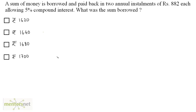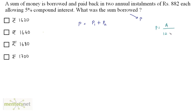A sum of money is borrowed and paid back in two annual installments of Rs. 882 each, allowing 5% compound interest. What was the sum borrowed? The sum borrowed is the principal P. Because there are two annual installments, we consider two separate principals — one for the first installment and one for the second. Adding these two principals gives the original sum borrowed. We know the formula: principal equals amount upon 1 plus r upon 100, raised to n.